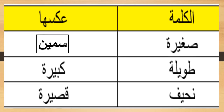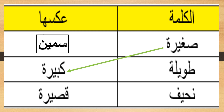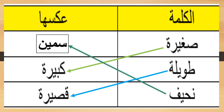صل بين الكلمة وعكسها - matching between the word and its opposite. صغيرة - كبيرة. طويلة - قصيرة. نحيف - سمين. صغيرة - كبيرة.